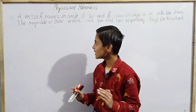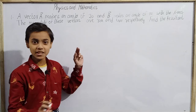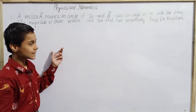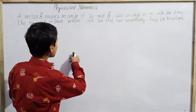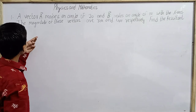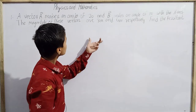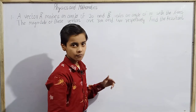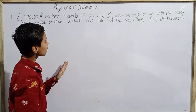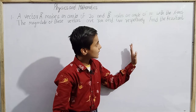Hello everyone and welcome back to SK Wonder Kids. Today we will do questions 1 through 4 from Physics and Mathematics by H.C. Verma. The first question is: Vector A makes an angle of 20 degrees and Vector B makes an angle of 110 degrees with the x-axis. The magnitudes of these vectors are 3m and 4m respectively. Find the resultant.